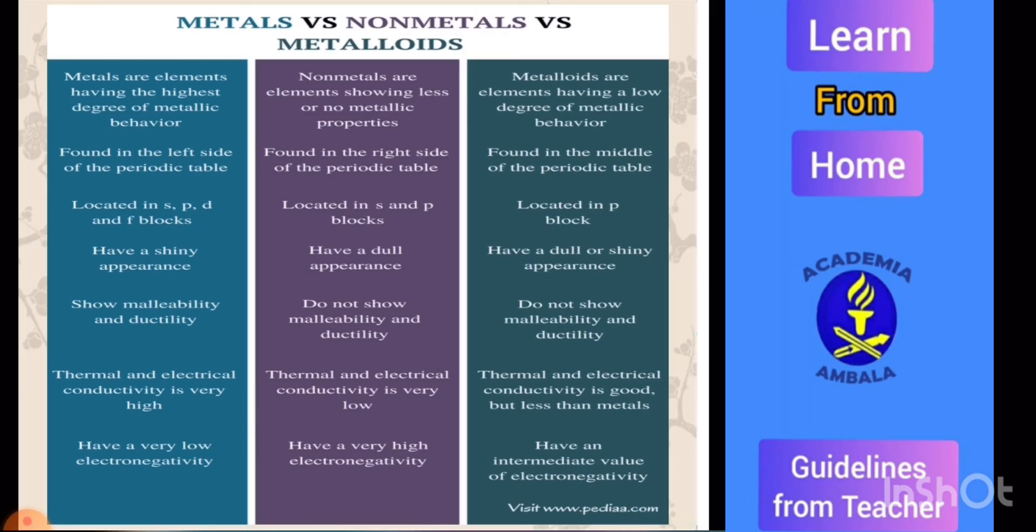Thermal and electrical conductivity of metals is very high, but in case of non-metals thermal and electrical conductivity is very low. In case of metalloids, thermal and electrical conductivity is good but less than metals. Metals have low electronegativity, but non-metals have very high electronegativity, whereas metalloids have intermediate value of electronegativity.